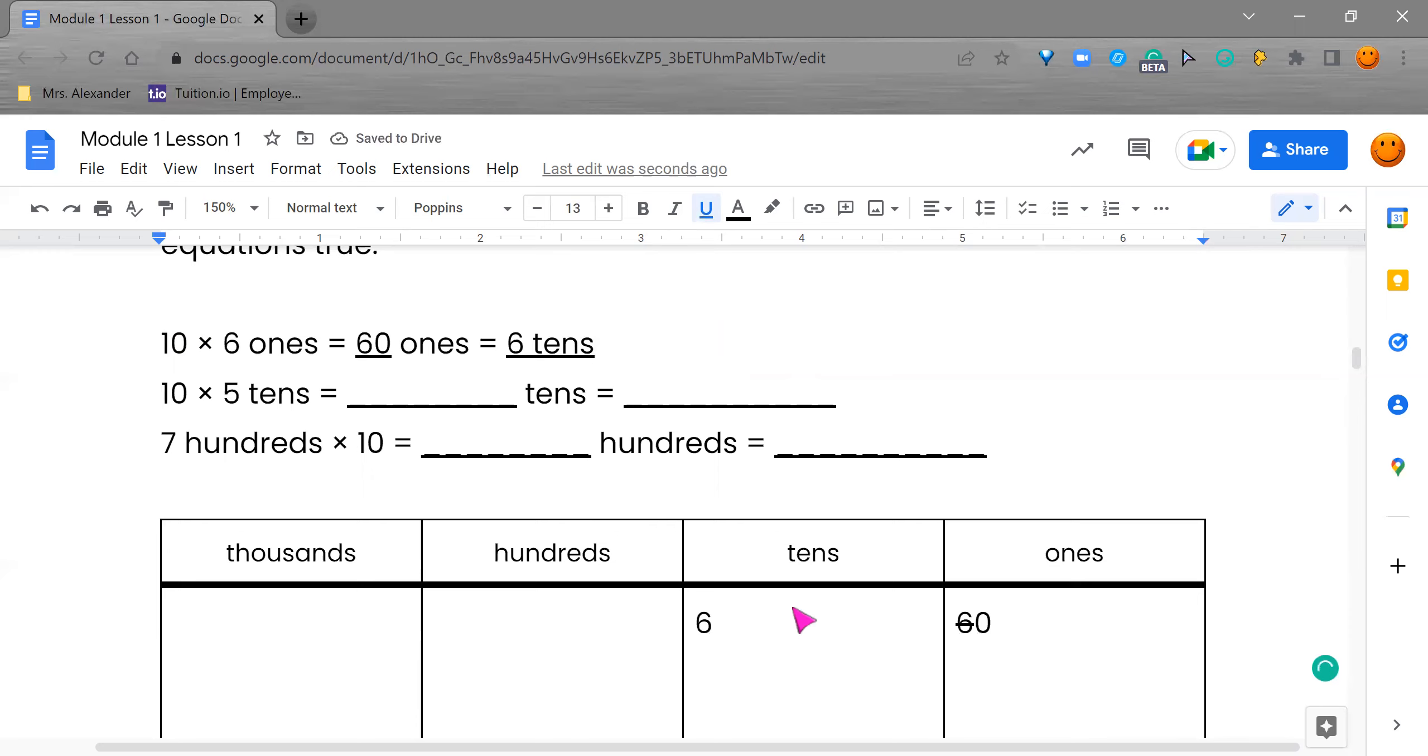So far, you guys are doing a great job. Thank you so much for hanging out with me. So let's look at our next one. We have 10 times 5 tens. So I'm going to put a space down in all my little boxes. So I'm going to jump into the tens. I have 10 times 5 tens, and I know that 10 times 5 is 50. So right here, I'm going to write 50 tens. So I did 10 times 5 tens equals 50 tens.